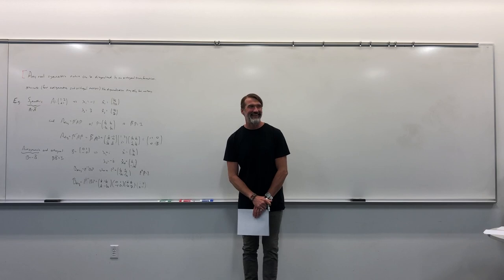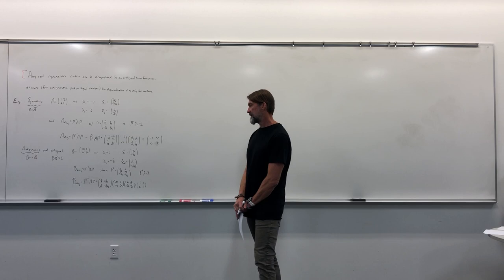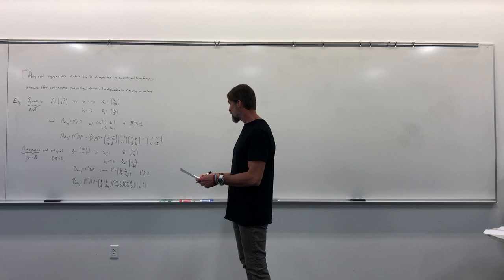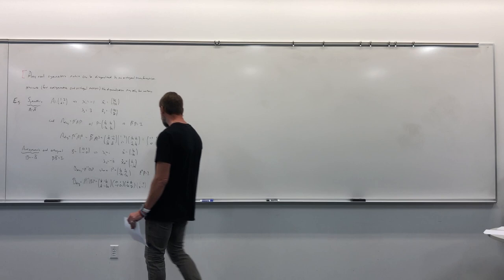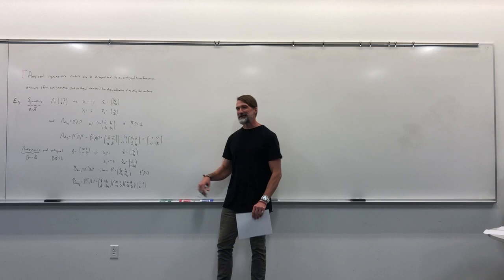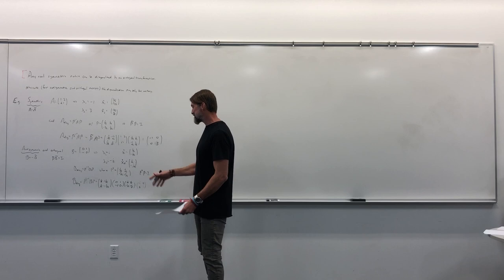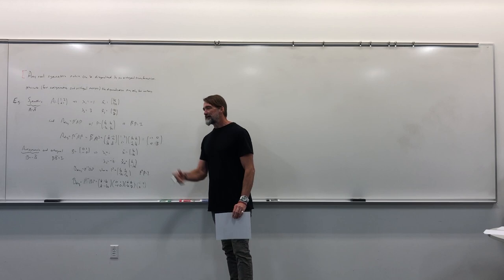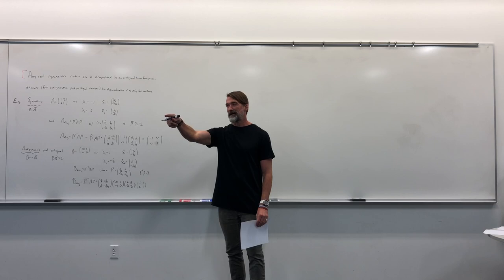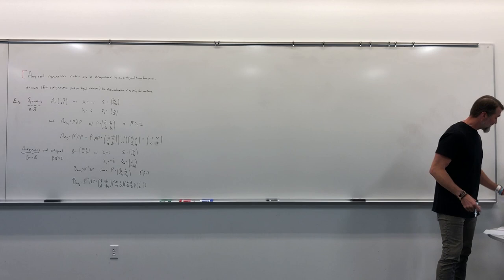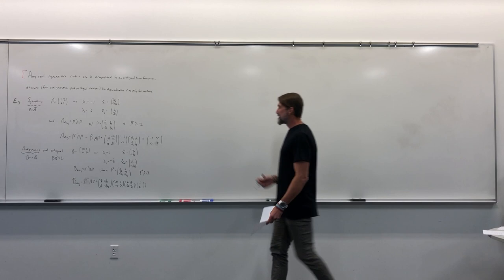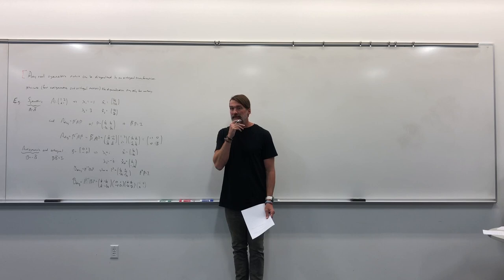The student catches that since x₂ was put first in the P matrix, the diagonal should have -i first, then i — confirming the result. There are no further questions about this symmetric and anti-symmetric demonstration. Now it's going to get confusing.